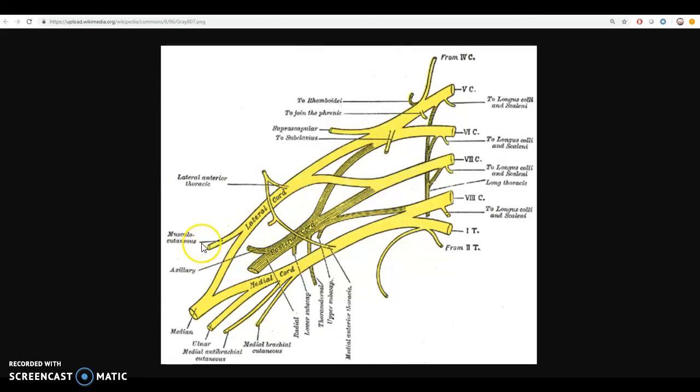The musculocutaneous, staying proximal, going to the biceps, the two cords coming together to form the median, going down the middle to those forearm flexors, wrist and digital flexors, and then the ulnar nerve going all the way down to the intrinsics of the hand. So that's a very schematic view of it.